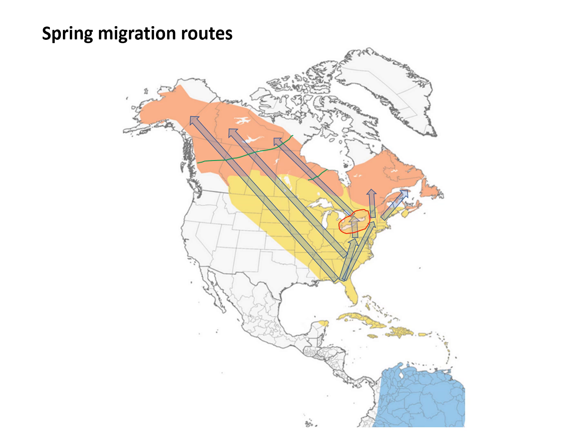It turns out that the stations within that area — most of the ones in southern Ontario and some in central New York, Pennsylvania, and even as far east as McGill — are catching birds in spring that are not going to the eastern region but are going to northern Manitoba and northeastern Northwest Territories.